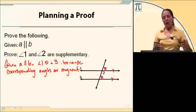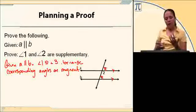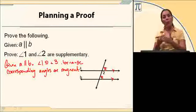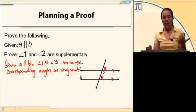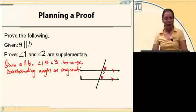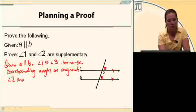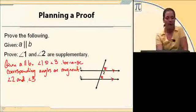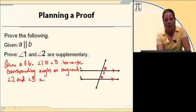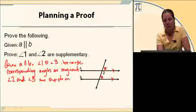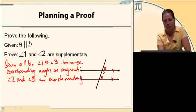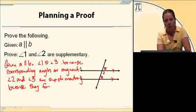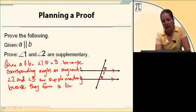Once I have corresponding angles are congruent, I want to somehow associate 2 with 3 so that I can replace 1 with 3. Well, angle 2 and angle 3 form a linear pair. So they're supplementary because they form a linear pair. So I'm going to say angle 2 and angle 3 are supplementary because they form a linear pair.